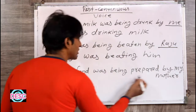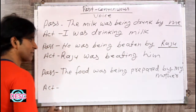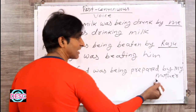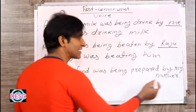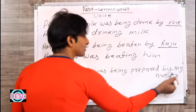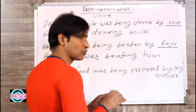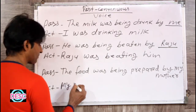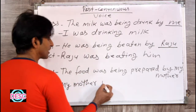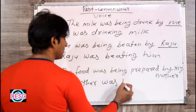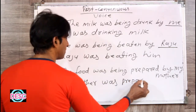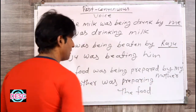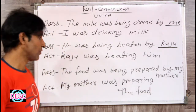The food was being prepared by my mother. Yahan par possessive aa gaya — 'my mother.' My, your, our, their, his, her — aisa aata hai, uske baad object aata hai, noun aata hai. To hum unhe saath mein likhte hain kyunki possessive hota hai, matlab ek sambandhak ho jaata hai. So: My mother was preparing the food.